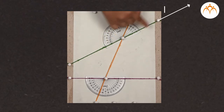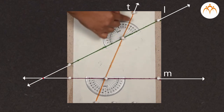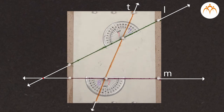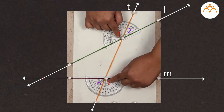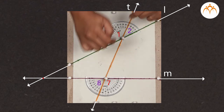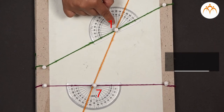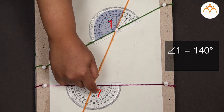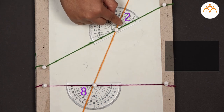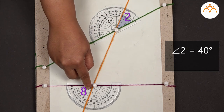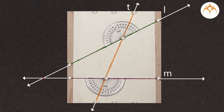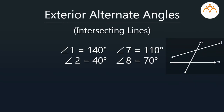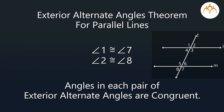You can see line L and line M are two intersecting lines cut by transversal T. You know that we get two pairs of exterior alternate angles. Angle 1 and angle 7 form the first pair and angle 2 and angle 8 form the second pair. Let us measure angles in the first pair. Angle 1 measures 140 degrees and angle 7 measures 110 degrees. Similarly, angle 2 is 40 degrees and angle 8 is 70 degrees. Now, we can say that when a transversal cuts two intersecting lines, we get two pairs of exterior alternate angles. But if we look at the measures of angles in each pair, there is no specific relationship between them, whereas in the case of parallel lines, each pair of exterior alternate angles is of congruent angles.